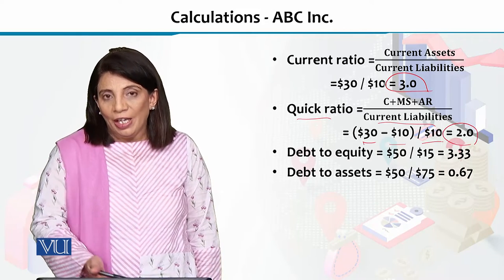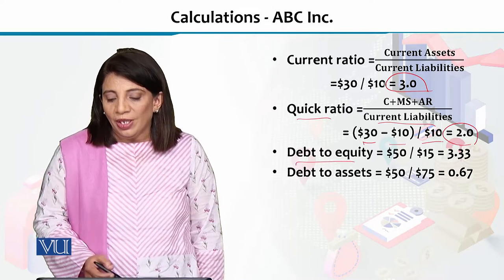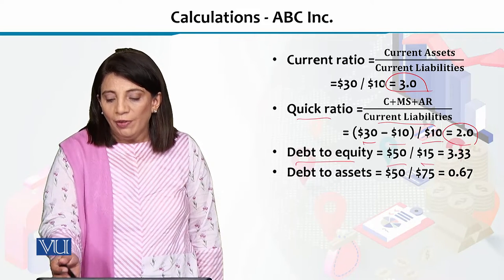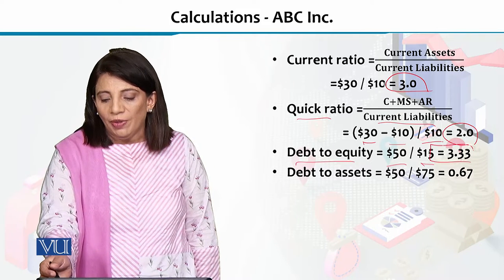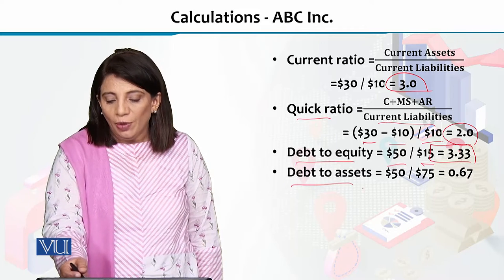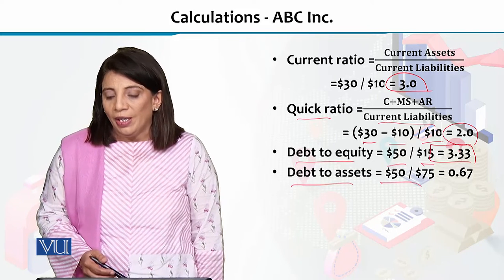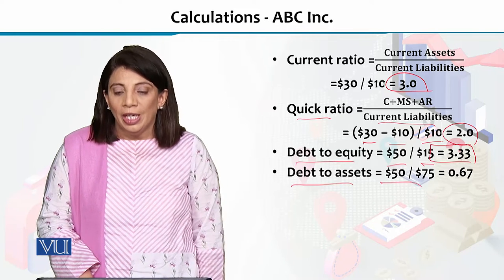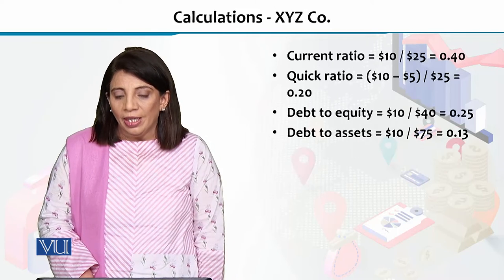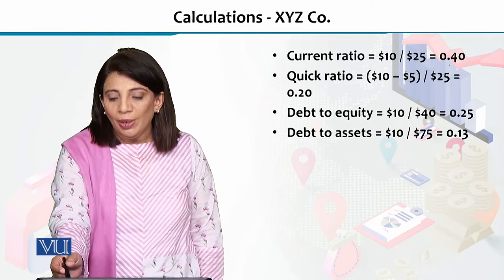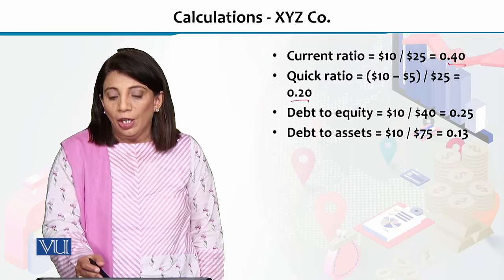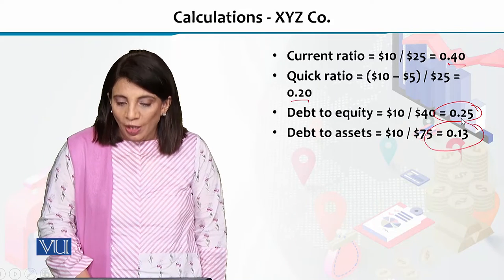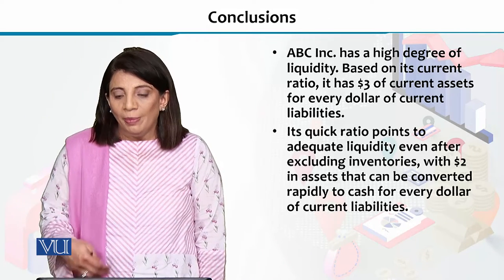We also calculated the debt-to-equity ratio for ABC: debt was $50 million and equity was $15 million, giving a debt-to-equity ratio of 3.33. The debt-to-assets ratio is $50 million divided by $75 million, which equals 0.67 for ABC. Applying the same analysis to XYZ Company, the current ratio is 0.4, quick ratio is 0.32, debt-to-equity is 0.25, and debt-to-assets ratio is 0.13.